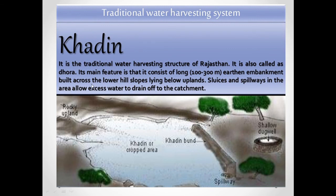The traditional water harvesting structure of Rajasthan is called khadins, also known as dhura. Its main feature is a long earthen embankment around 100 to 300 meters long, built across the lower hill slopes below the uplands. Spillways allow excess water to drain off to the catchment. This covers the topic of water as an important natural resource — its importance, irrigation systems, benefits and harmful effects of dams, and traditional water harvesting systems. In the next video, we will discuss another important natural resource: coal and petroleum.